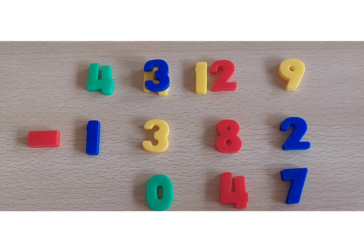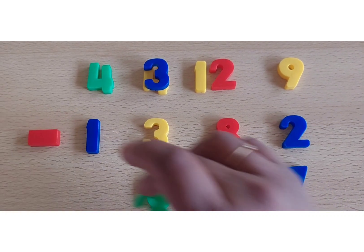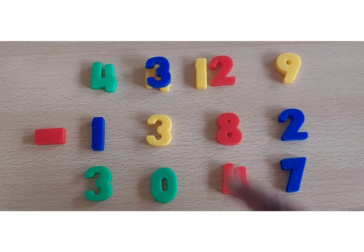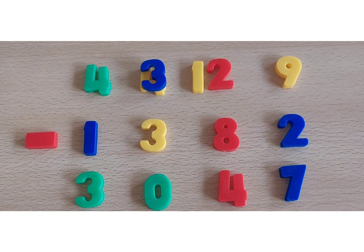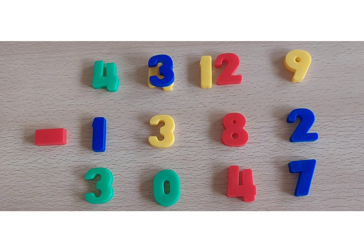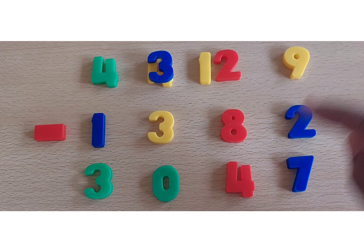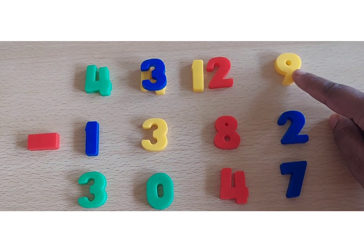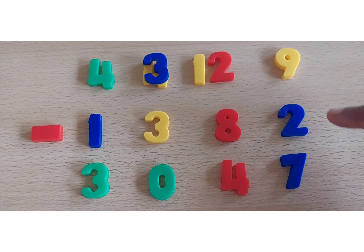Now four minus one gives us three. So here we have taken another example for subtraction. We cannot subtract a bigger number from the smaller number. So in simple language we call it as the greater number and the smaller number.